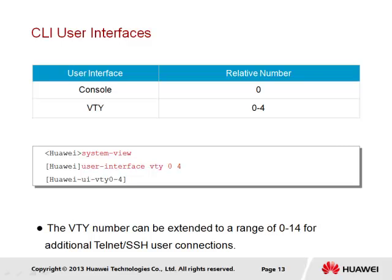As part of establishing access to the VRP managed device, we have the console interface, used to provide access to VRP. The management of the console interface can be achieved through the console user interface. There is only a single relative number here, meaning only a single console interface can exist at one time for one device. The virtual teletype (VTY) interface is a second form, allowing multiple virtual connections to be made to the device from remote devices via Ethernet. This generally supports up to 5 virtual Telnet-based connections from 0 to 4, but can be extended to allow up to 15 connections to a single device at any given time.